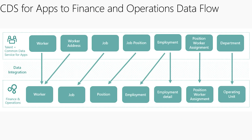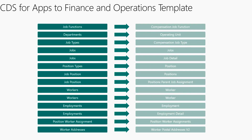Since we're not going directly from the Talent database to the Finance and Operations database, we have that stop in the middle with CDS. The entities in CDS from a Talent perspective aren't one-to-one with those entities in Finance and Operations. For example, in Talent and CDS, worker is split into worker and worker address, whereas in Finance and Operations that's all just worker. Job position is what it's called in CDS. Employment is a single entity in CDS, whereas in Finance and Operations it's split into employment, employment detail, position worker assignment, and department.